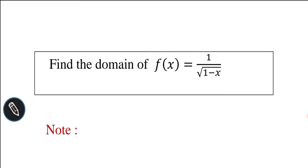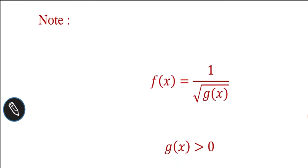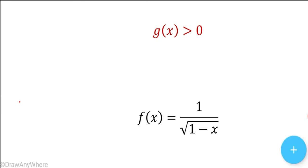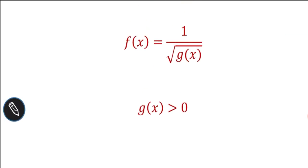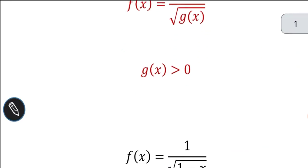Find the domain of f(x) = 1 divided by square root of 1 minus x. Note that if the given function f(x) is of the form f(x) = 1 divided by square root of g(x), we have to write g(x) greater than 0. So g(x) must be greater than 0.